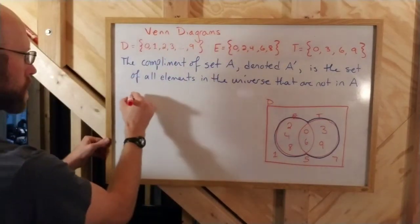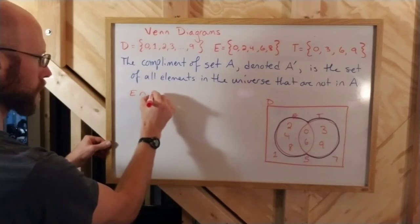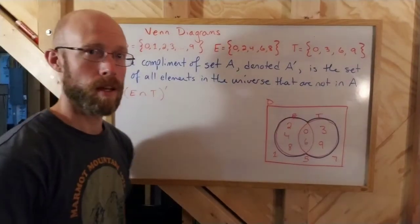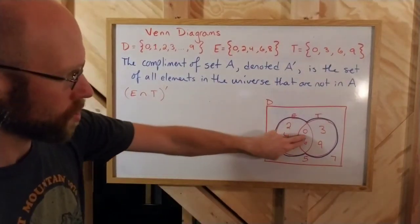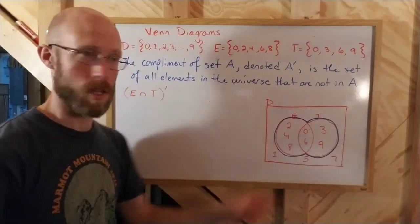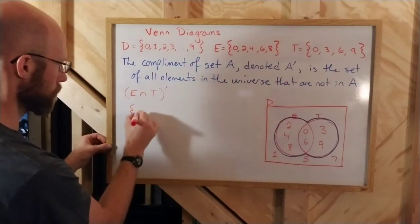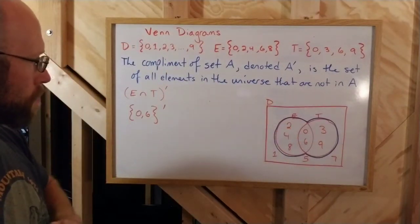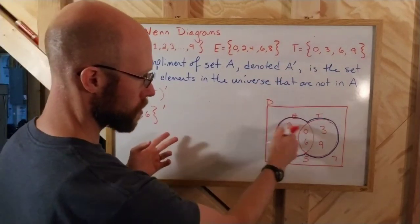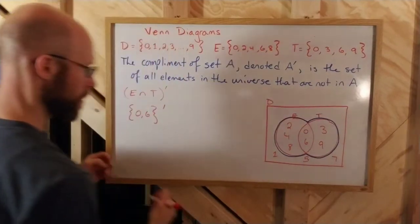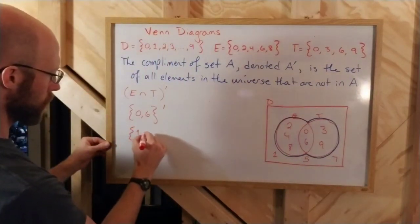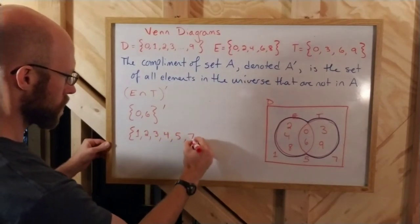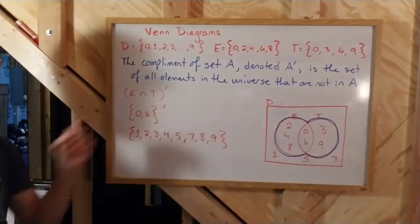Let's take the complement of E intersect T. So I'm going to take E intersect T complement. Well, E intersect T is just the pair of elements 0, 6. So it would technically be the complement of 0, 6, right? So the intersection of 0, 6, we want its complement, which would be everything else. Like 1, 2, 3, 4, 5, 7, 8, 9. So that would be 1, 2, 3, 4, 5, 7, 8, and 9. That would be the complement of the intersection.